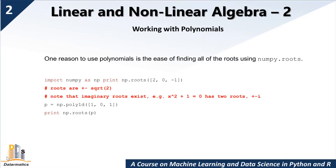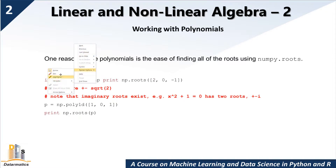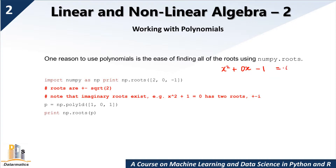This will be lesson 8 of our machine learning and data science in Python and R. Today we are going to be seeing how to work with polynomials. We are going to see how to solve polynomials. So let me just write out a few polynomials and then let's see how to solve them. We have a polynomial of this form: x squared plus 0x minus 1 equal to 0. This is how polynomials are.